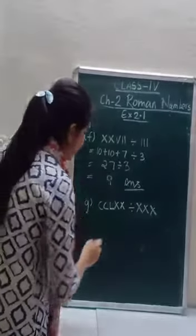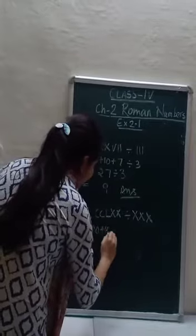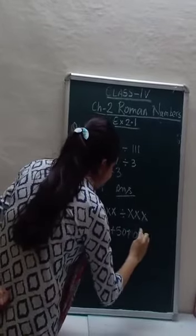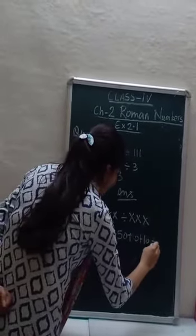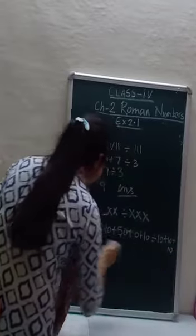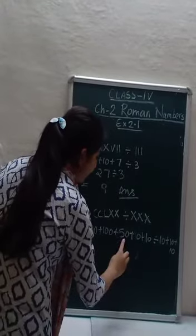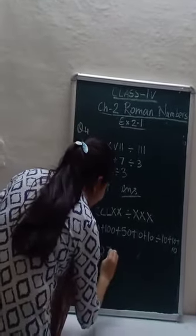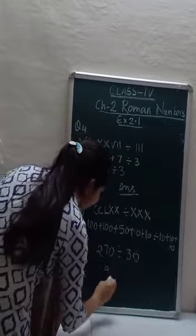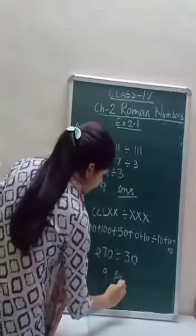We will do part C. Value of C is 100, CC is 200, plus L is 50, giving 250, plus X is 10 giving 260, plus X giving 270. Divided by XXX which is 30. So 270 divided by 30 equals 9. Three 9s are 27 — and 9 times 30 is 270. So again the answer is 9.